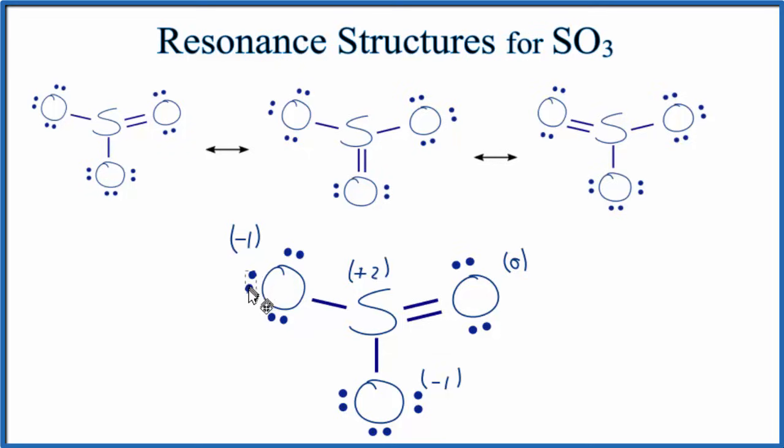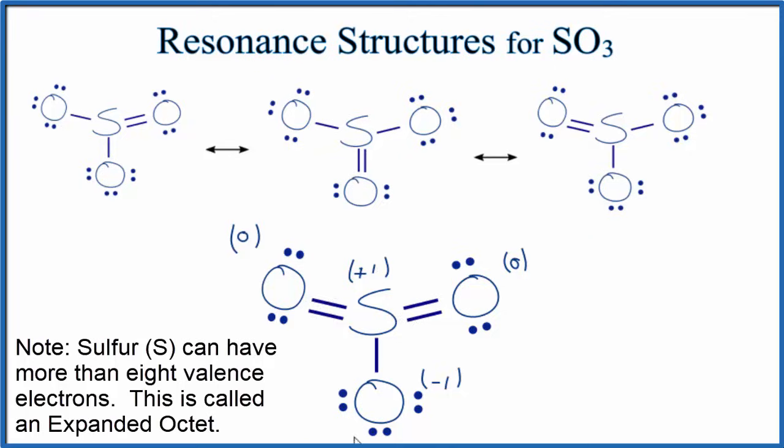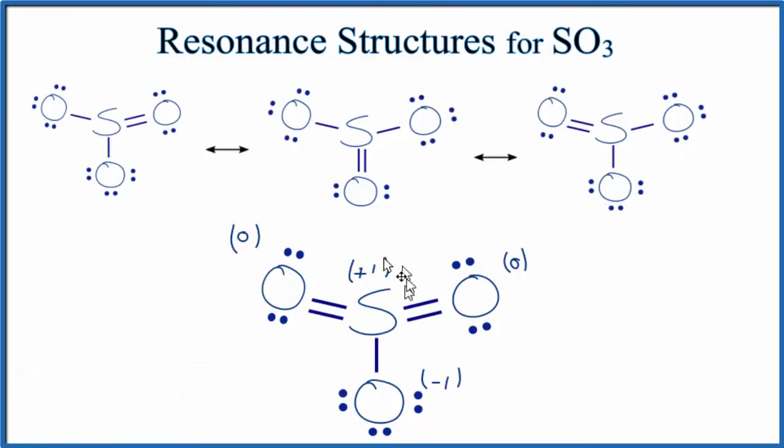If we move these two electrons here to form a double bond, this is what happens. Now our formal charges are closer to zero. This became a zero. This became a plus one instead of a plus two.